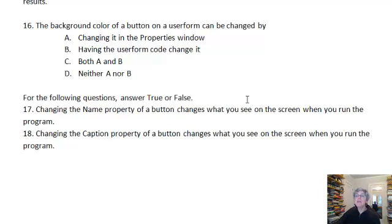Okay, next. The background color of a button on a user form can be changed by changing it in the properties window, having the user form code change it, both A and B, neither A nor B. Alright, this would be both, so the answer is C.